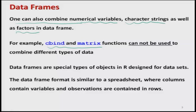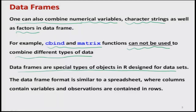If you compare the data frame with matrix or cbind function, this possibility is not available there — cbind and matrix cannot be used to combine different types of data. Data frames are simply special types of objects in R designed especially for dealing with data sets. The format of a data frame is very much similar to a spreadsheet, where columns contain variables and observations are contained in rows.